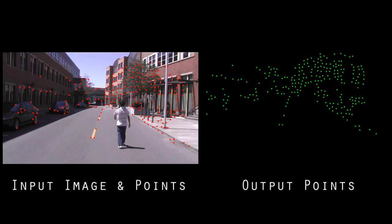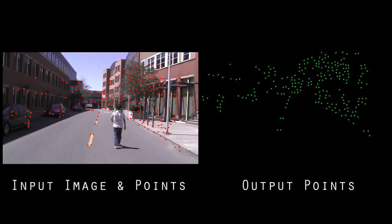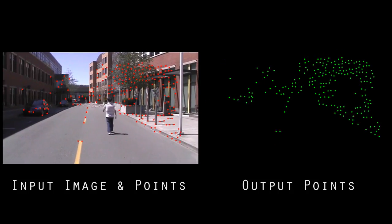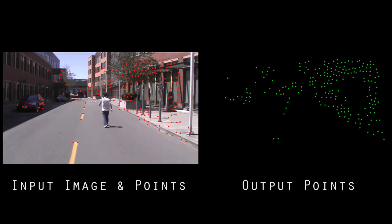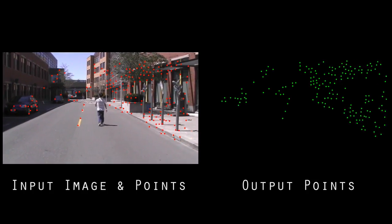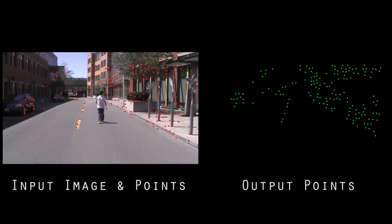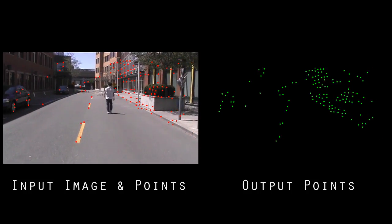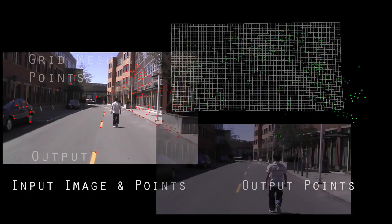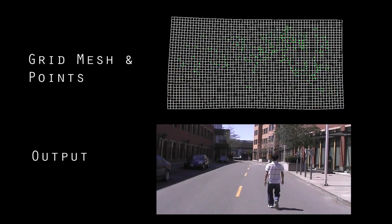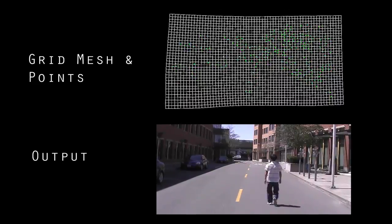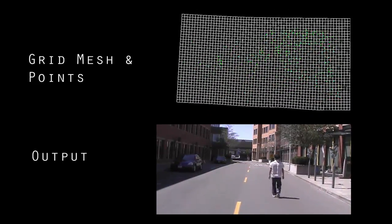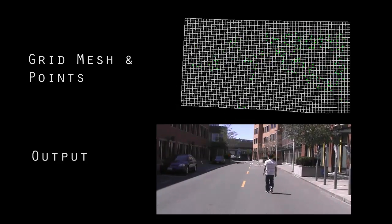To guide this warp, we project the reconstructed 3D scene points into both the input and output frames. This produces a set of sparse displacements — from the red points to the green points — for each video frame that will guide our warping method. We then discretize a spatially varying warp over a quad mesh that tries to both preserve local shape within the scene and follow the sparse displacements.